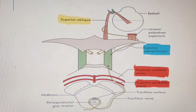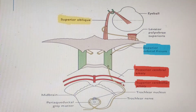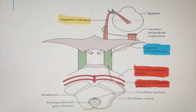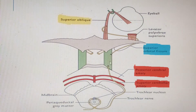Just like the oculomotor nerve, the trochlear nerve runs between two arteries: the posterior cerebral artery above and the superior cerebellar artery below. From there it passes lateral to the posterior clinoid process, then runs along the lateral wall of the cavernous sinus.